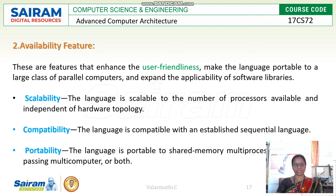The second feature is availability features. Availability features represent qualitative factors. There are three important qualitative features: scalability, compatibility, and portability. Scalability refers to the number of processes available independent of the hardware technology — how processors can be added and to what extent.